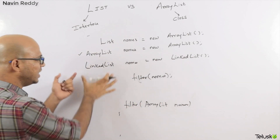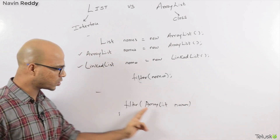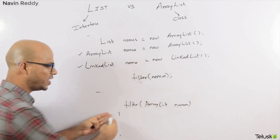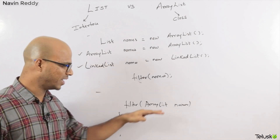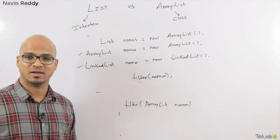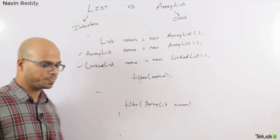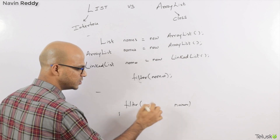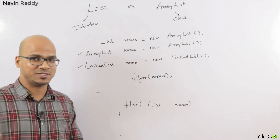Now if you want to pass a LinkedList instead, you have to either replace the ArrayList parameter with LinkedList, or create another overloaded method — so you'd have two filter methods in the same class: one accepting ArrayList, one accepting LinkedList. But why create two methods doing the same thing when you can do it in one method? Instead, you can pass a List, because List will accept both ArrayList and LinkedList.